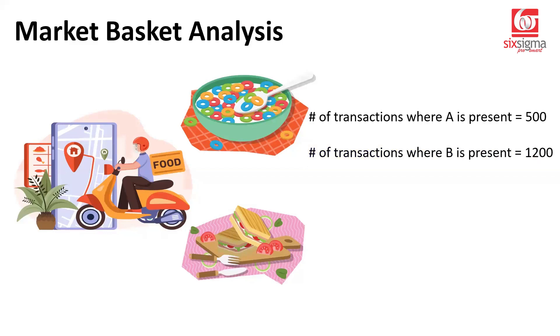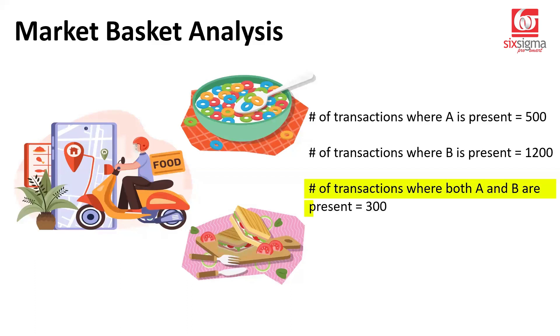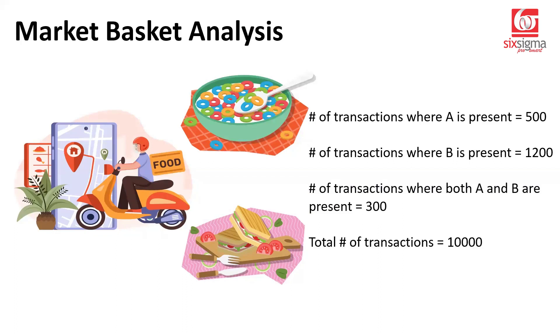They also found that there are people who have ordered A and B together, and that number is 300. And of course they don't only sell A and B — they sell many other items. So they have totally done about 10,000 transactions in a month.